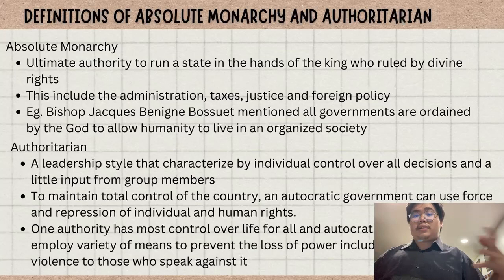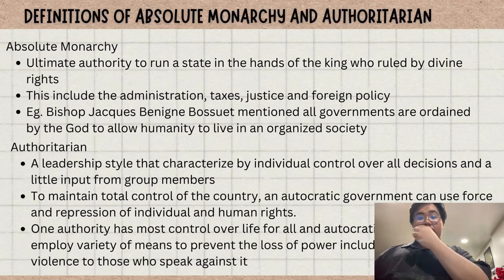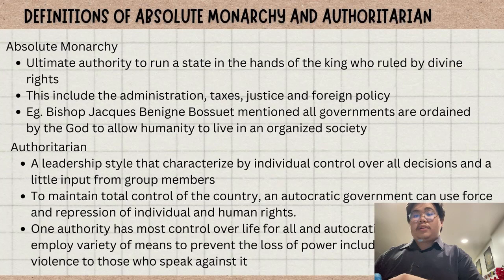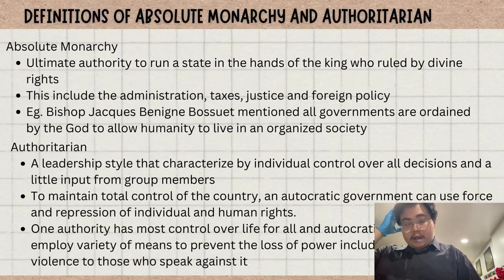This authority includes justice, judiciary, and foreign policy. This can be proven where the most prominent advocates of divine right monarchy during the 17th century argued that all governments were ordained by God to allow humanity to live in an organized society.